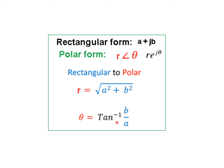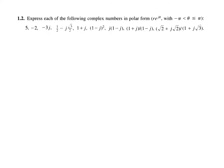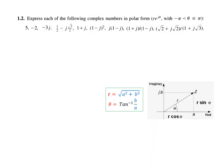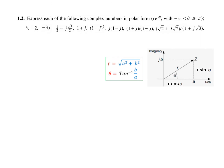Theta is tangent inverse of b over a. The question asks us to express each of the following complex numbers in polar form, that is in the form r e raised to the power j theta, where the angle must be between minus pi and plus pi — greater than minus pi and less than or equal to pi.